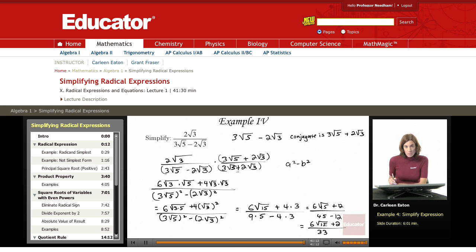And this is in simplest form. There are no perfect squares under the radical, there are no fractions under the radical, and there's no longer a radical in the denominator. That was our last example for this lesson, and today we covered simplifying radicals. See you soon on educator.com.